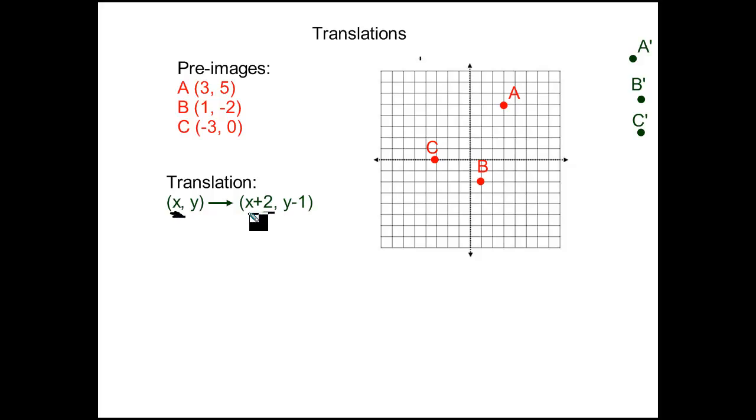So for us, A prime is going to show up not with an x-coordinate of 3, but with an x-coordinate of 3 plus 2, which is 5. For the y-value, you're going to want to subtract 1 from every y-coordinate. So A had a y-coordinate of 5. We're going to subtract 1 from that, of course, get 4.